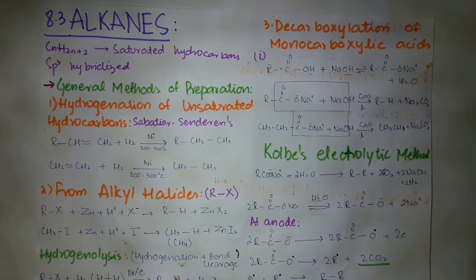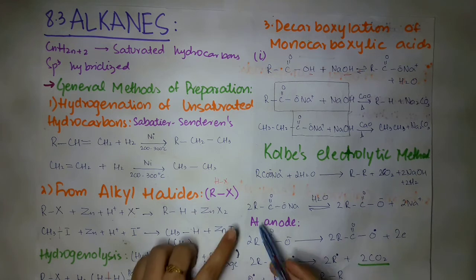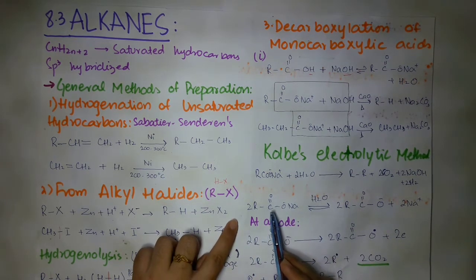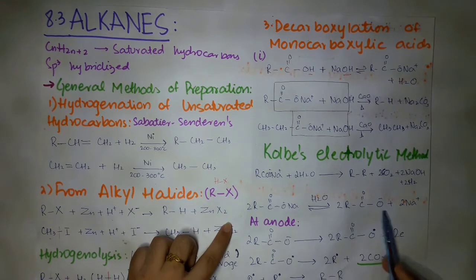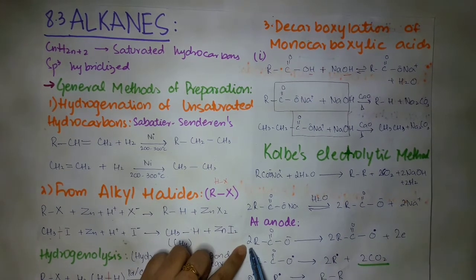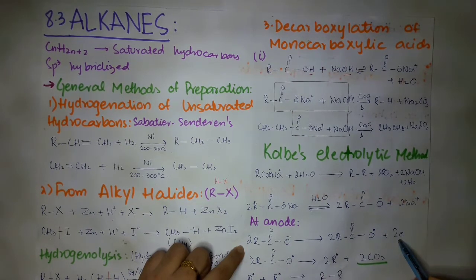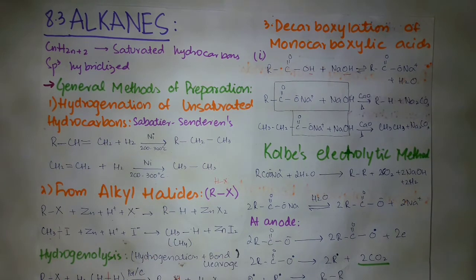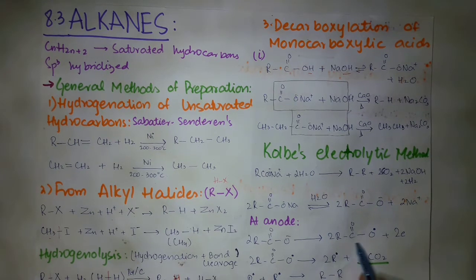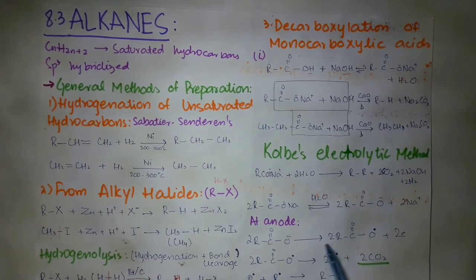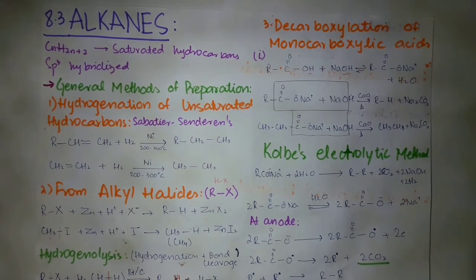When the anion comes to the anode, it loses electrons — oxidation takes place. We have two molecules of sodium salt, producing two negative ions. Each ion loses one electron and becomes a free radical. We discussed earlier that when an ion loses one electron, it becomes a free radical. So since we took two ions, we got two free radicals. These two free radicals then release CO2.